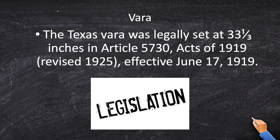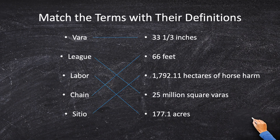To begin with, we have the vara. The Texas vara was legally established at 33 and one-third inches. Let's draw a line directly across from the vara to 33 and one-third inches.